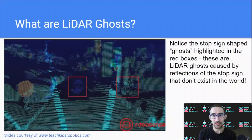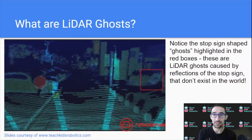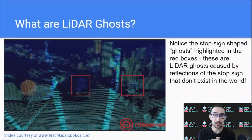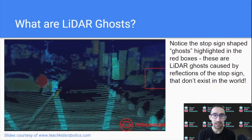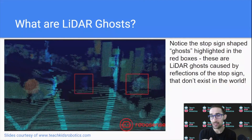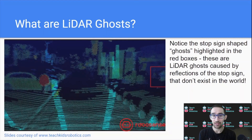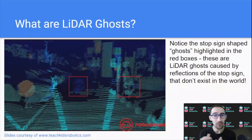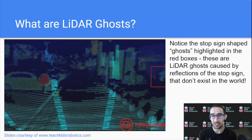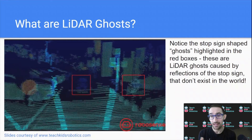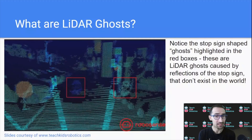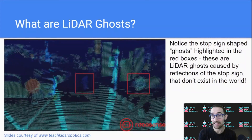So what are LiDAR ghosts in real life? Notice the stop sign shaped ghosts highlighted in the red boxes. These are what we call LiDAR ghosts because they're caused by reflections of the stop sign reflecting the LiDAR rays we've sent from our sensor, creating these stop sign-looking ghosts — perceived returned rays that don't actually exist — coming from the highly reflective stop sign. The LiDAR sensor detects them and calculates a distance for them, but there is actually no object at that distance.